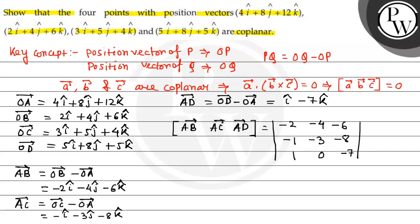Now we'll expand this determinant. Expanding along the first row: -2 times 21, plus 4 times (7 + 8), minus 6 times (0 + 3). This result is -42, this one 4 multiplied with 15, and this one is -18.